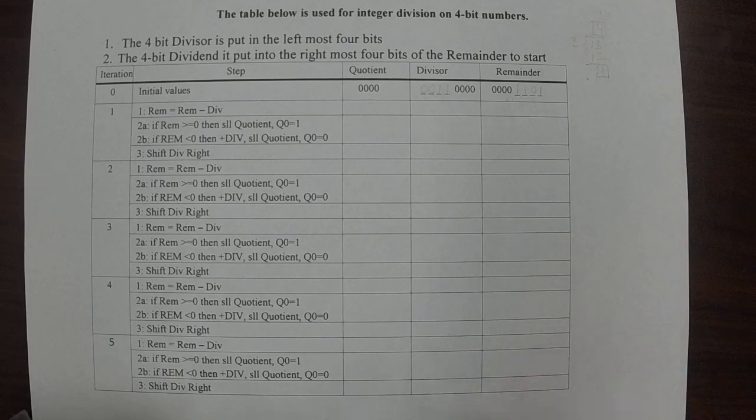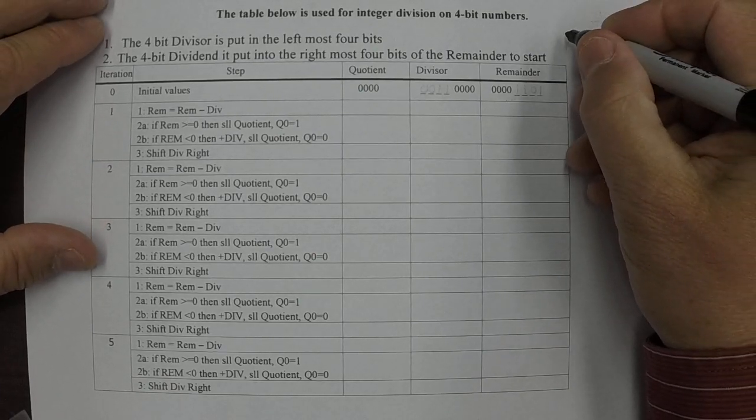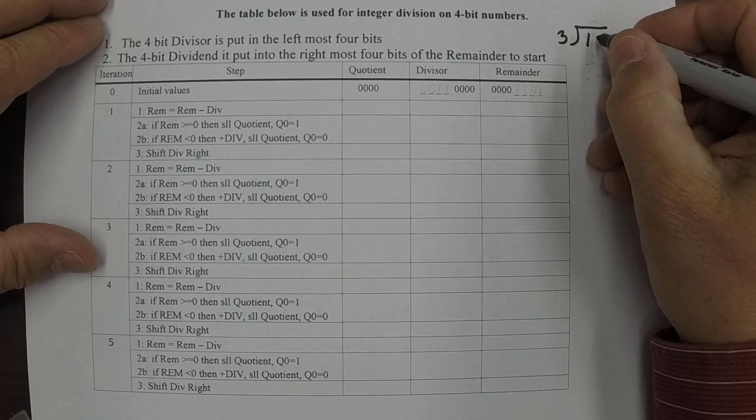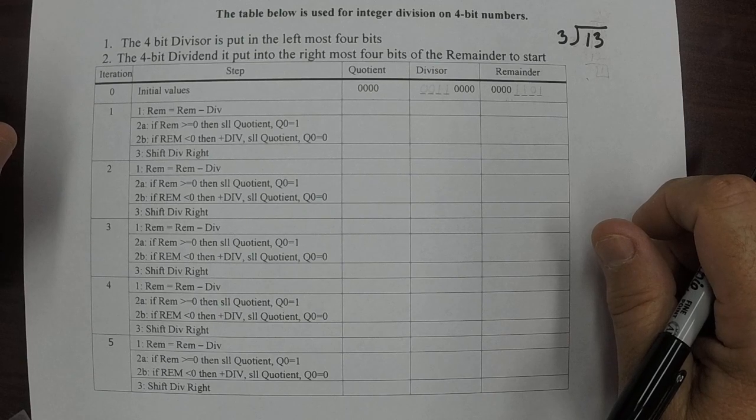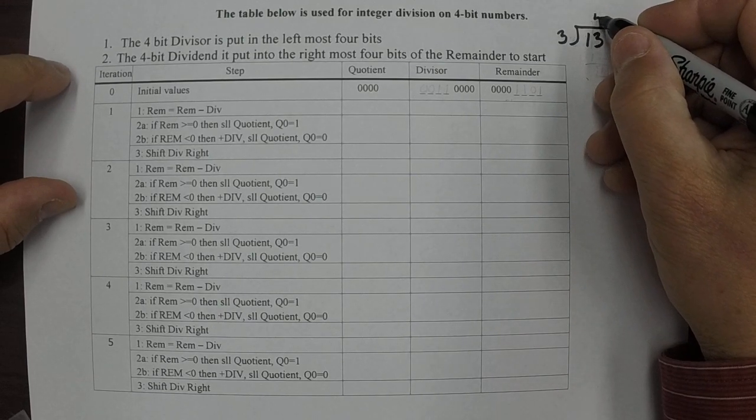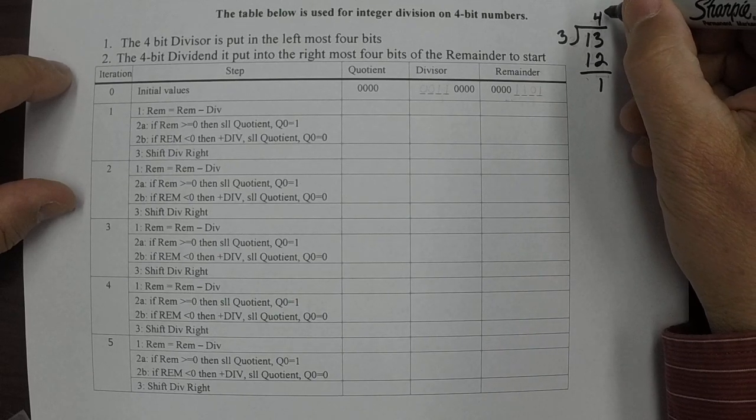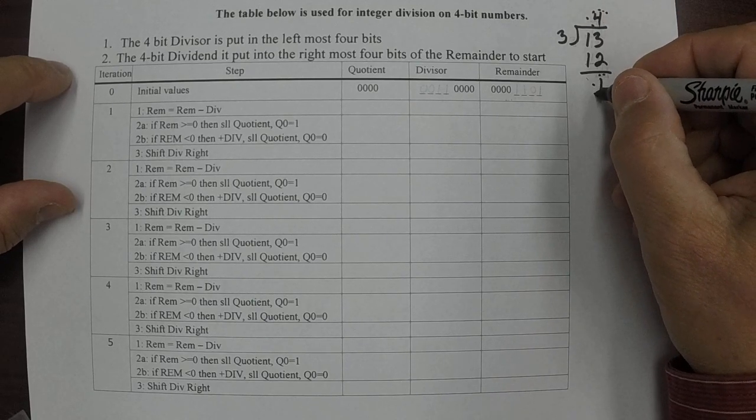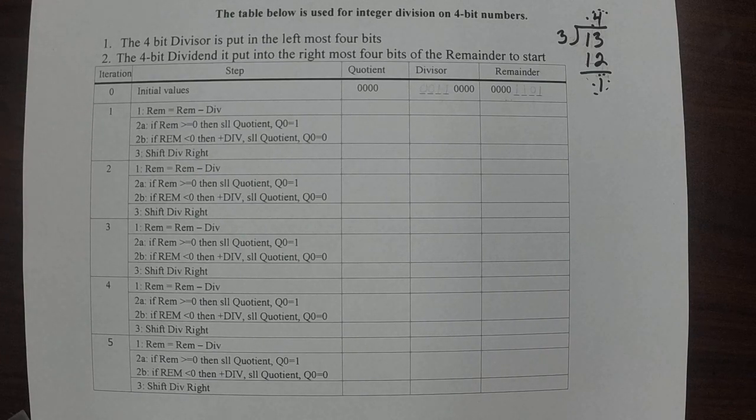We're going to divide three into thirteen. If you remember your mathematics from grade school, you should know that three goes into thirteen four times with a remainder of one. So we're looking for the answers four and one as a remainder. Hopefully when we get done, that's what we'll see.